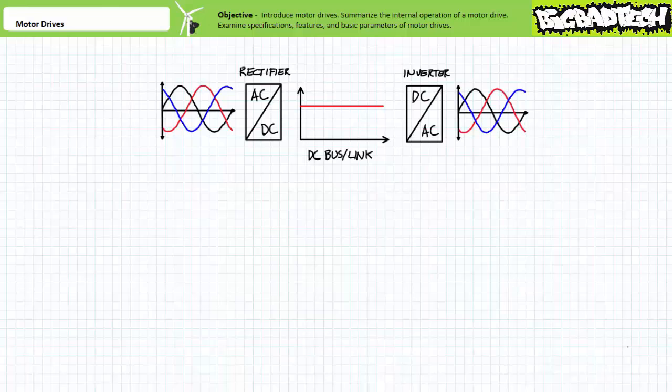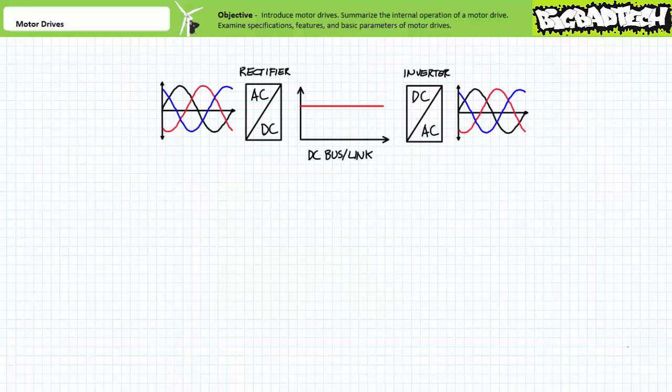When viewed at this level of detail, a motor drive is a rectifier — an AC-to-DC converter — followed by an inverter — a DC-to-AC converter. For this reason, motor drives are somewhat mistakenly referred to as inverters, which actually only describes one half of their purpose. The DC voltage between the two related power electronics stages is known as the DC bus or DC link, which can store tremendously large values of DC voltage. For example, a motor drive operated on 120V line-to-neutral and 208V line-to-line three-phase AC might have an average DC bus value of over 280 volts.